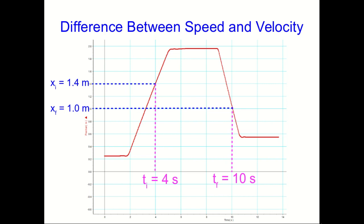We can now easily calculate the average x-component of velocity over this time interval, because clearly the x-component of the displacement is negative 0.4 meters, which gives us this average x-component of velocity: negative 0.067 meters per second.